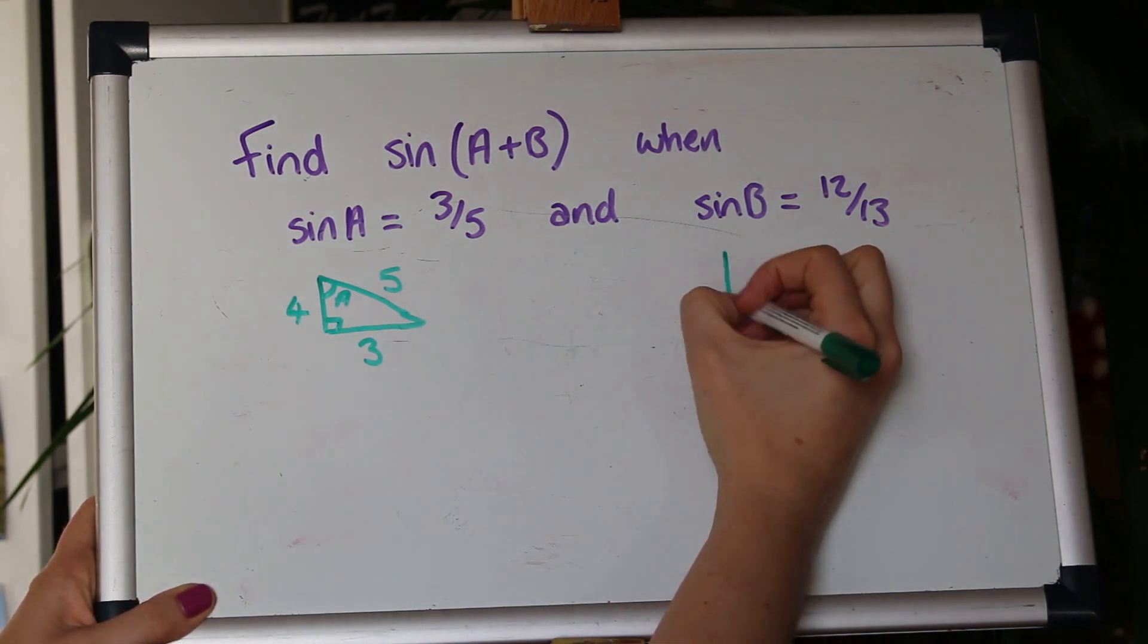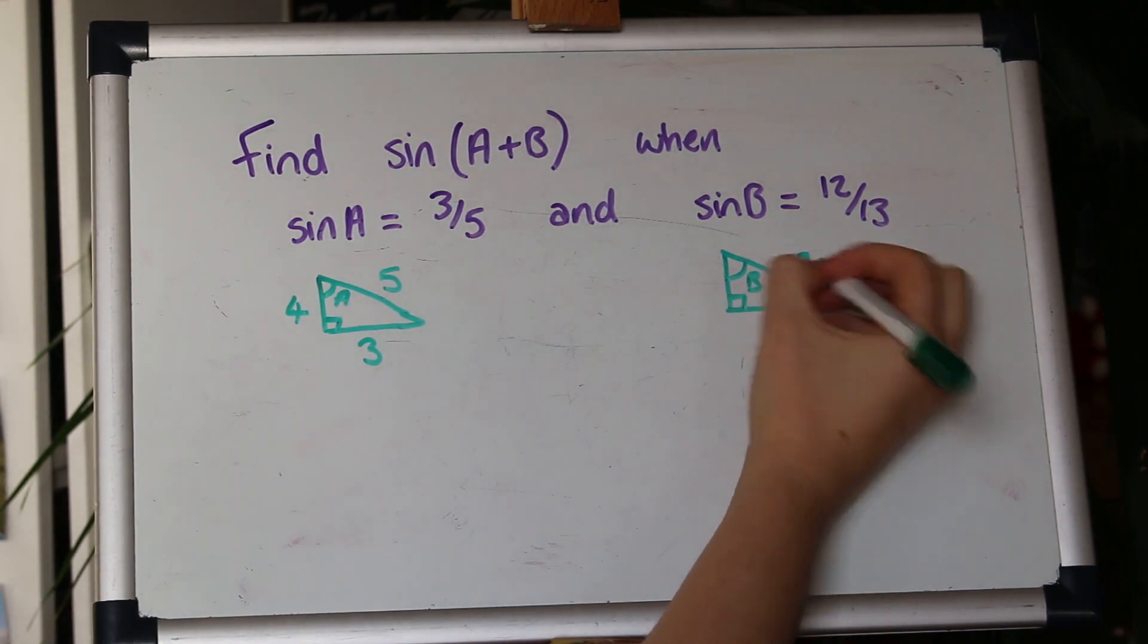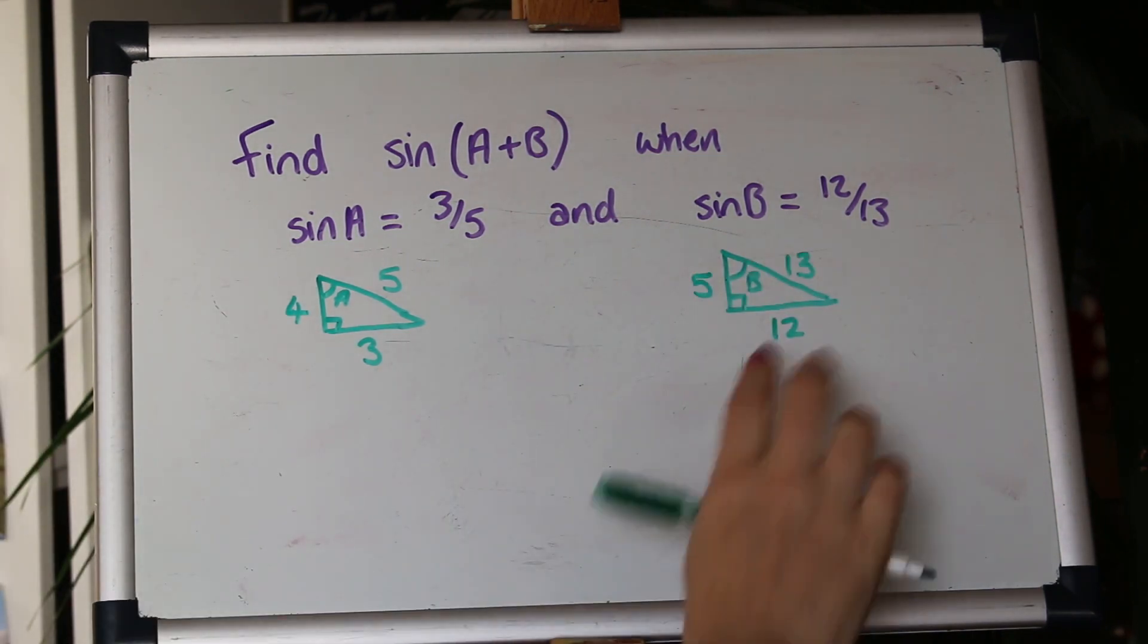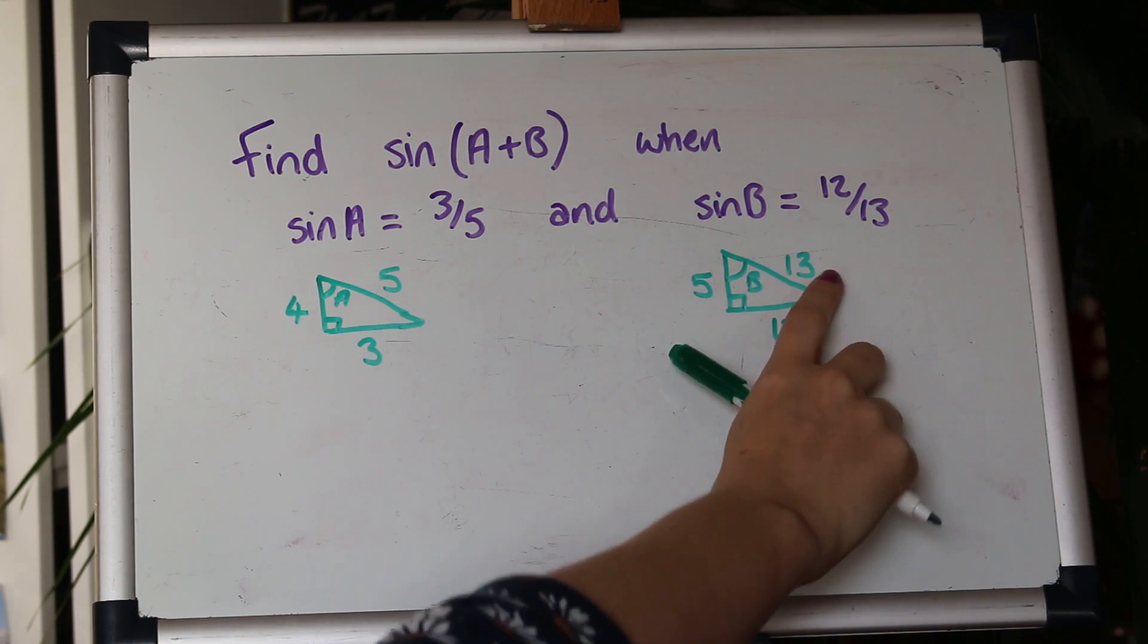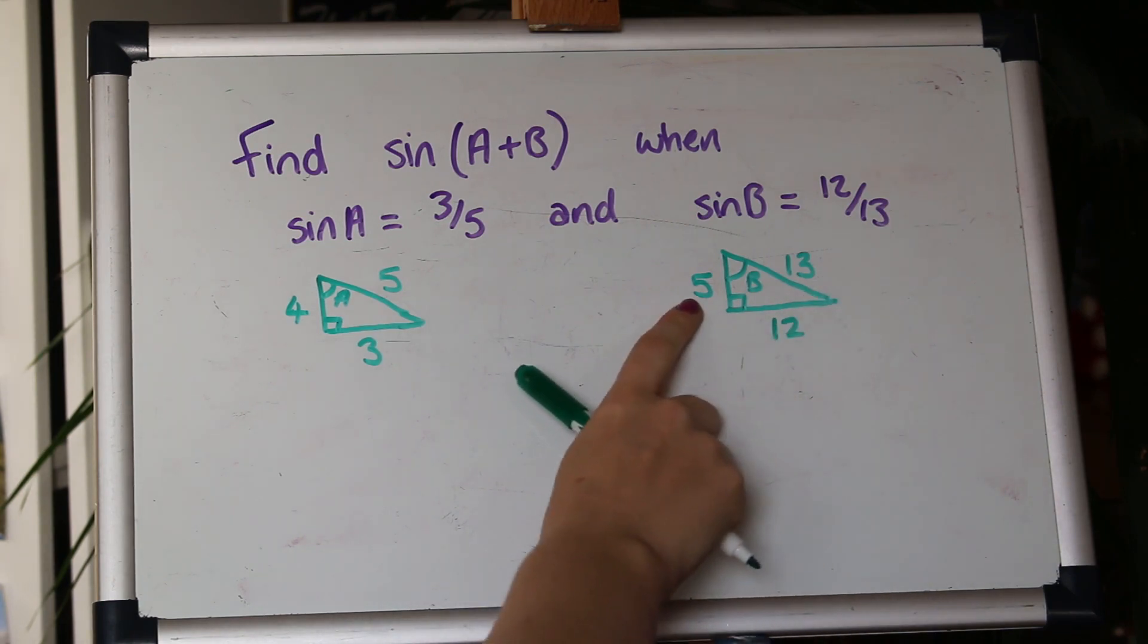We'll do the same for this triangle here. I haven't shown my working but obviously 13 squared take away 12 squared left me with 25 and square root that to get 5.